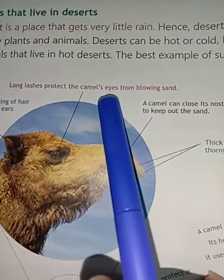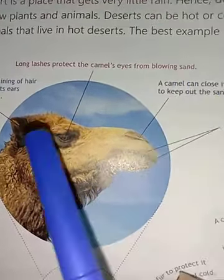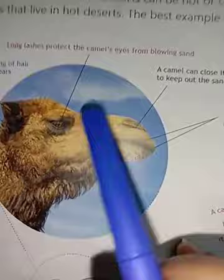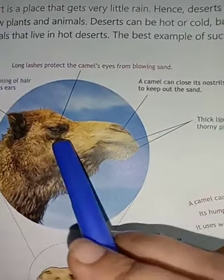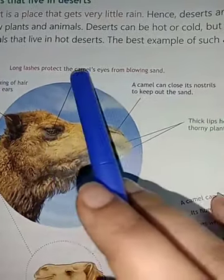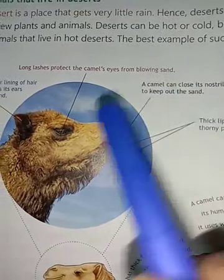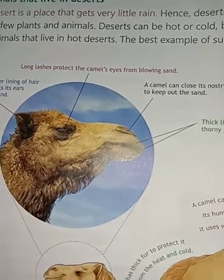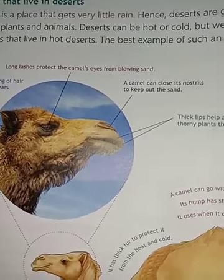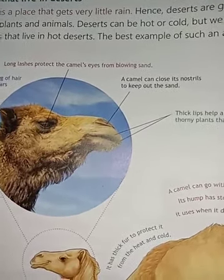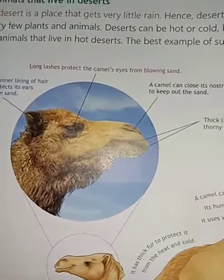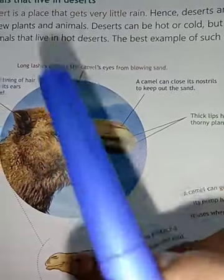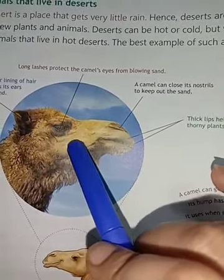Long eyelashes protect the camel's eyes from blowing sand. You also have eyelashes, but the camel's eyelashes are very long. When sand blows, these eyelashes protect the eyes. If sand enters the eye it becomes very difficult to see — so naturally, God has made the camel's lashes long to prevent this.